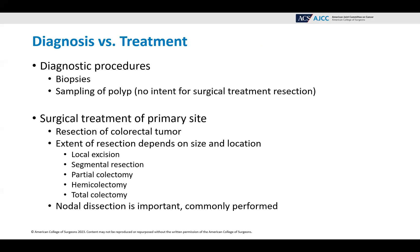Diagnosis versus treatment is always a source of confusion. Diagnostic procedures are biopsies or sampling of a polyp with no intent for surgical treatment resection. Surgical treatment of a primary site includes resection of the colorectal tumor, and the extent of the resection depends on the size and location — it could be a local excision, segmental resection, partial colectomy, hemicolectomy, or even total colectomy. While nodal dissection is important and commonly performed, you don't need a nodal dissection in order to assign pathological staging and consider this treatment.